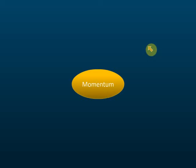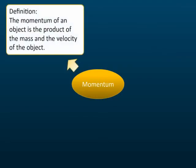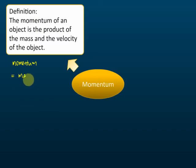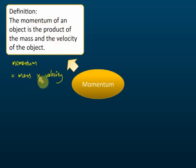There are a few things you need to know about momentum. The first is the definition. The momentum of an object is the product of the mass and the velocity of the object, meaning momentum is equal to mass multiplied by velocity. In an exam, if you are asked to give the definition of momentum, you can write this in words, or you can give the formula: momentum equals mass multiplied by velocity. Either form will earn you one mark.